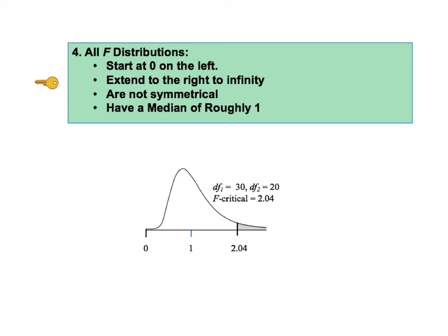Third, they are never perfectly symmetrical. Although, as KTU number two states, they do get close to symmetrical for larger values of the degrees of freedom. And finally, they all have a median which is close to one.